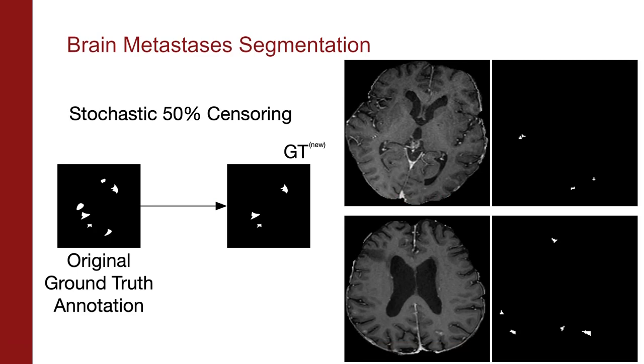Most datasets have pristine labels like what you're seeing here. But what would happen if we knocked out or censored half of our lesion annotations?